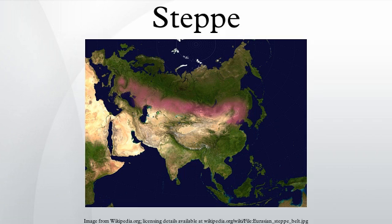A steppe may be semi-desert, or covered with grass or shrubs or both, depending on the season and latitude. The term is also used to denote the climate encountered in regions too dry to support a forest, but not dry enough to be a desert. The soil is typically of Chernozem type.